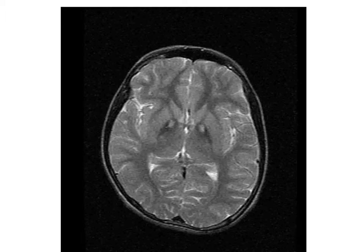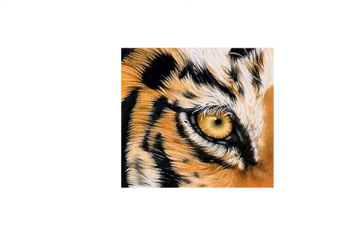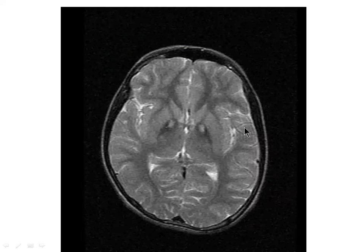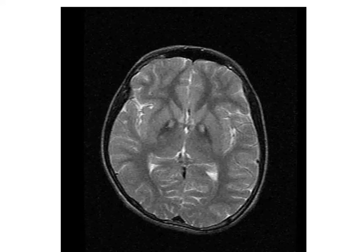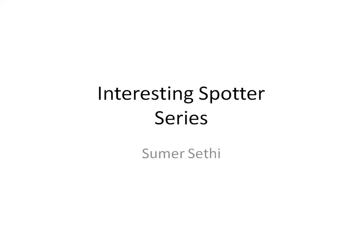This has been given a very characteristic name — a sign which is asked many times in exams and kept as a spotter for MD residents. This is called the Eye of the Tiger sign: central bright, surrounding dark. This sign is characteristic of a disease called Hallervorden-Spatz disease.